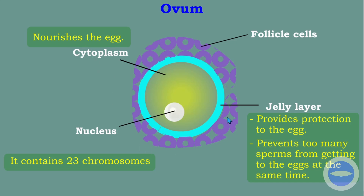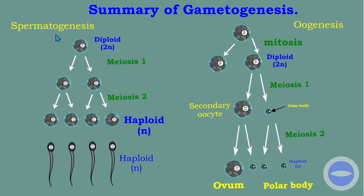These are the functions we must be aware of and understand. Now I want to show the difference between spermatogenesis and oogenesis. With spermatogenesis, we have one diploid cell and at the end we end up with four haploid sperm cells, all capable of fertilizing an egg. With oogenesis, we also start with one diploid cell, but at the end we end up with only one ovum — the other three are polar bodies that are not capable of being fertilized. This one produces four sperms, while oogenesis produces only one ovum.